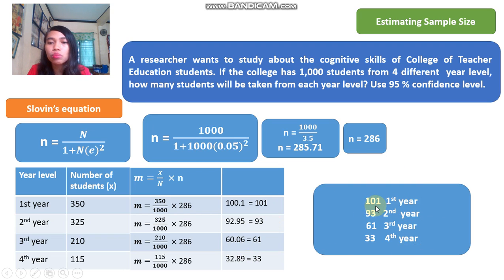So we have 101 students for first year, 93 for the second year, 61 for the third year, and 33 for the fourth year. So this is Sloven's equation.